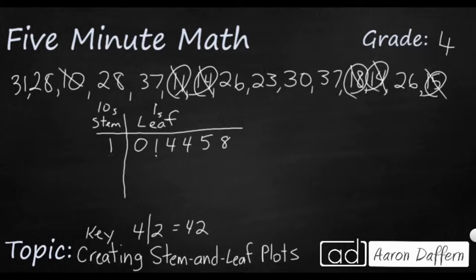Next we're going to go into our 20s. So we're going to put a 2 in the stem, and let's see what we have here. We've got 28, two different 28s, 26, 23, and another 26. So it looks like 23 is going to be my first one.